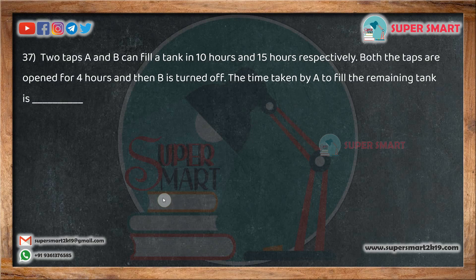This is a tap sum, that is a time-related sum. What are you going to ask? There are two taps, Tap A and Tap B. Two taps are filled with a tank in 10 hours and 15 hours. If you fill the tank with Tap A, it takes 10 hours. If you fill the tank with Tap B, it takes 15 hours.